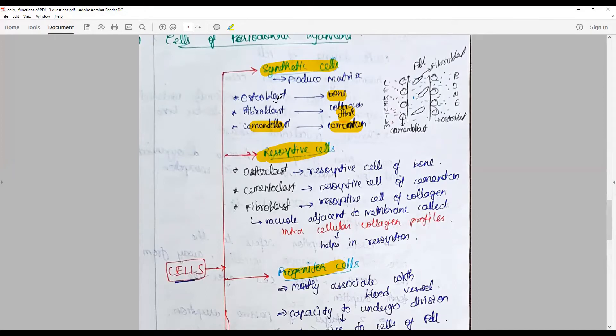Osteoblasts are large single nucleated cells present along the surface of the bone. They are involved in active synthesis. Fibroblasts are spindle-shaped cells situated in the matrix with a less prominent nucleus. Cementoblasts line the layers of the cementum and are not often seen.